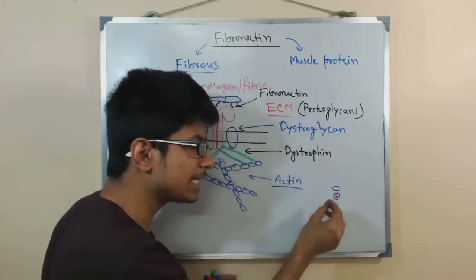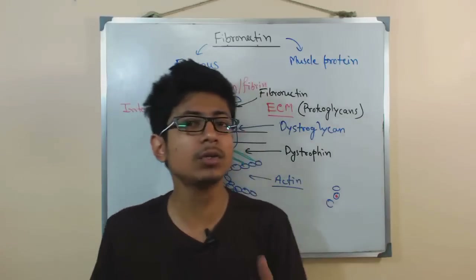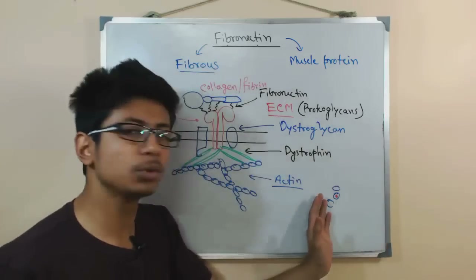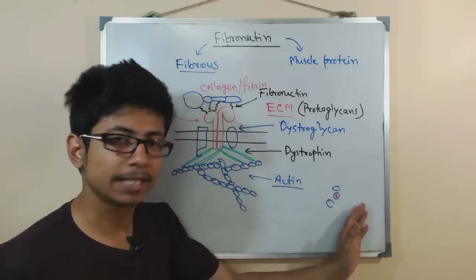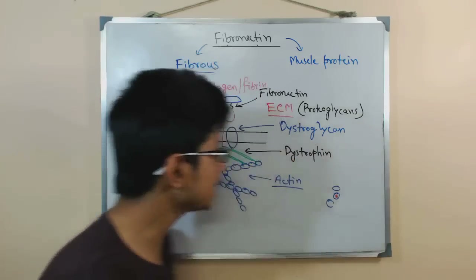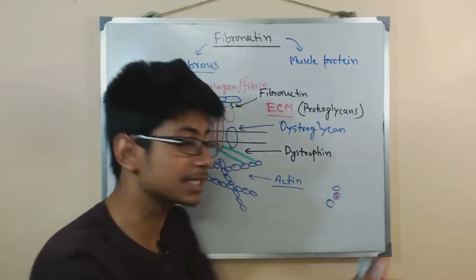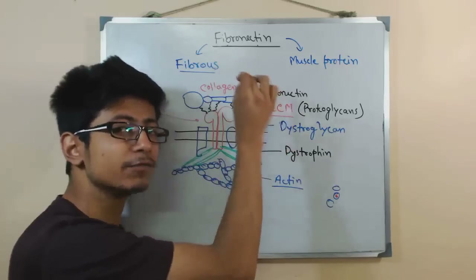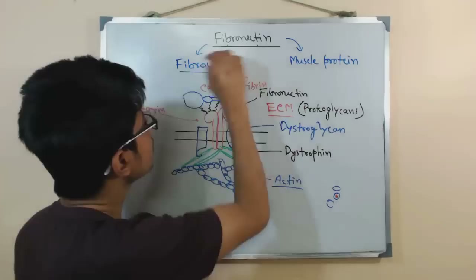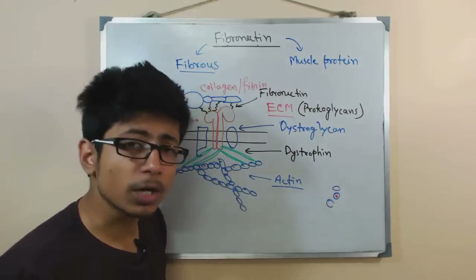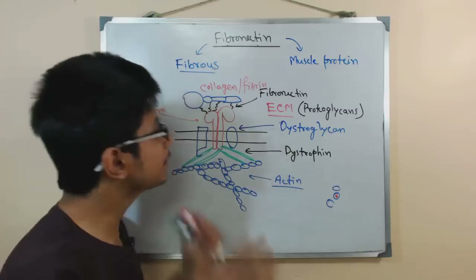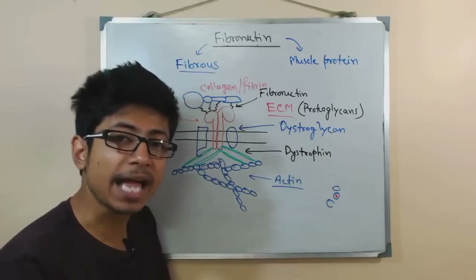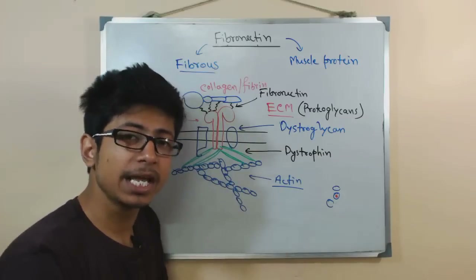The only way cells can sense what is outside is by cross-talking with the extracellular matrix, and that can only be achieved through interlinking molecules like fibronectin. This is similar to how you cannot know who is outside your home unless you open the door. Fibronectin plays a huge role in wound healing, and it is interesting because of this broader function.